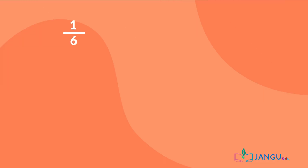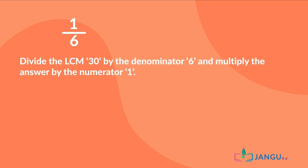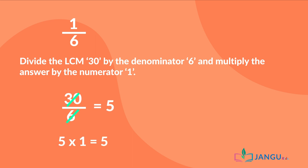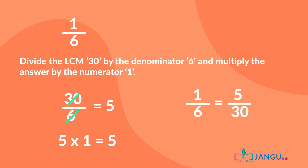Now the next fraction is 1 over 6. We divide the LCM, 30, by the denominator 6, and multiply the answer by the numerator 1. 30 divided by 6 is 5. 5 times 1 is 5. Therefore, 1 over 6 is equivalent to 5 over 30.